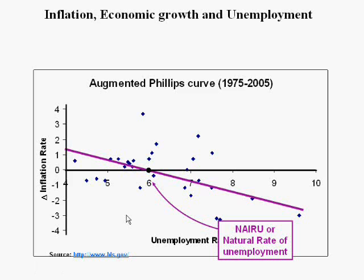So if the Fed likes where inflation is — maybe currently it's at 2 — then it would like to keep unemployment near 6. As long as it keeps unemployment near 6, inflation will remain at 2 because the change in inflation is equal to 0. So this year, if the inflation rate is 2 and the unemployment rate remains at 6 for the entire year, inflation next year will be 2. That's why keeping real GDP equal to full employment output is so important: there's no tendency for inflation to increase or decrease because the unemployment rate will equal the natural rate.